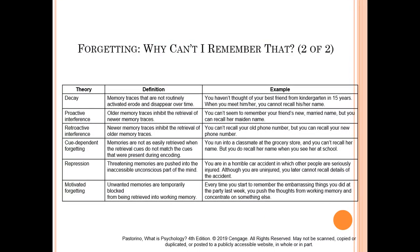Decay occurs after you stop rehearsing memories for a while — the memory stops being as sharp or accessible. If you haven't thought about your best friend from kindergarten in 15 years, when you meet him you can't remember his name. That's decay. With the right trigger or enough time, you might pull the name out because it's technically still there, but it's hard to retrieve because of decay.